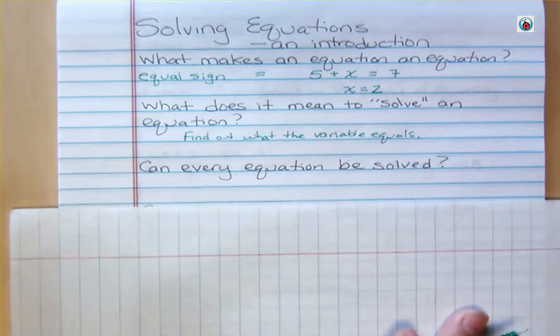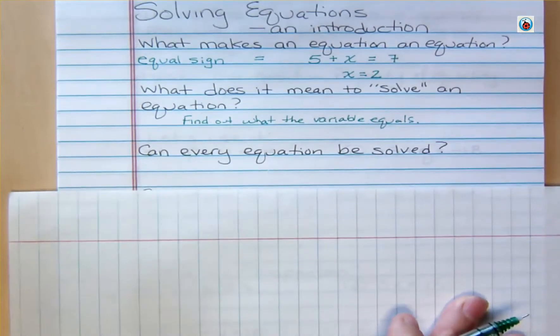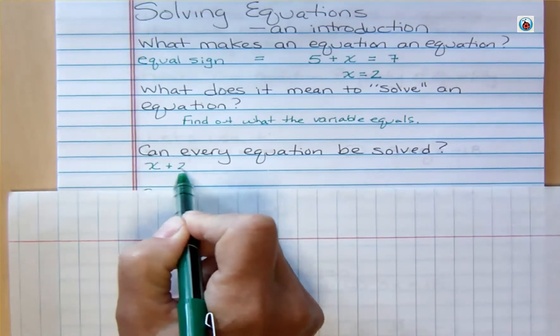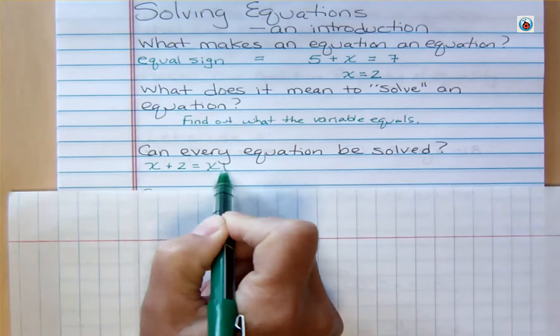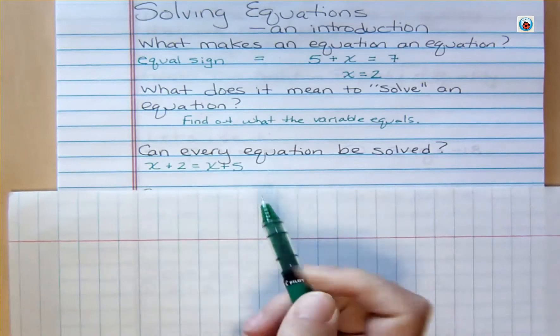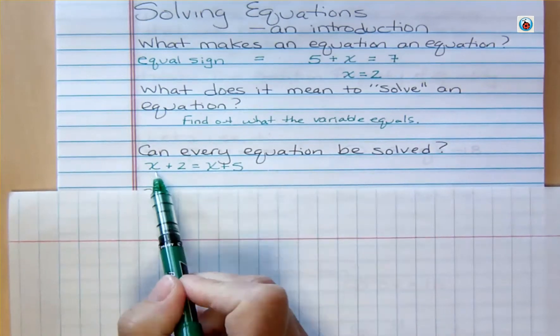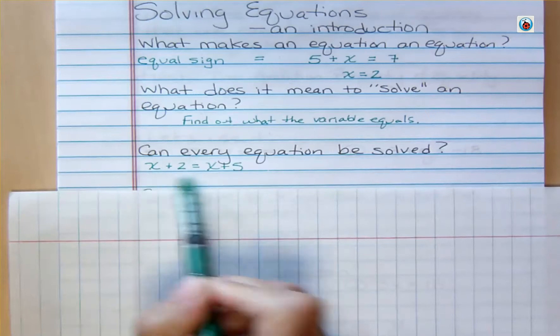Can every equation be solved? Well, almost all the equations that you start off with are going to be able to be solved. But it's true that some equations cannot be solved. There's no x or y or variable in the world that would make it true. Like, let's say I had this: x plus 2 equals x plus 5. So what we're seeing with this equation is that there's some variable that if you add 2, you can get the same as if you add 5.